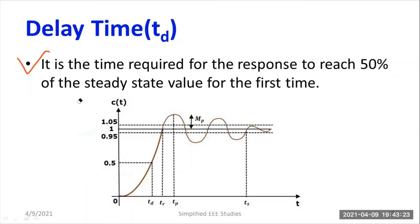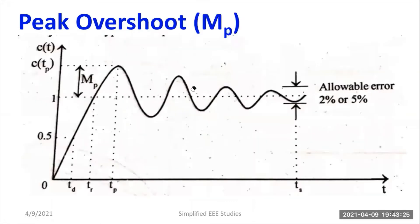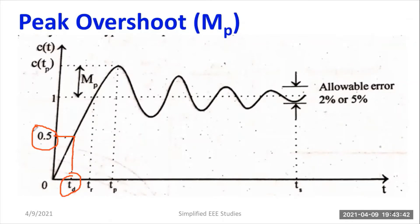Now I would like to derive an expression for delay time. Here you can observe the waveform of a second order underdamped system. You can figure out the delay time td — the time taken to reach 50% of the final value of the response for the very first time.